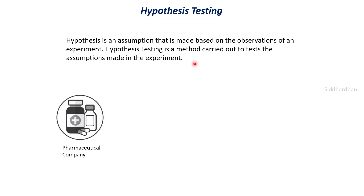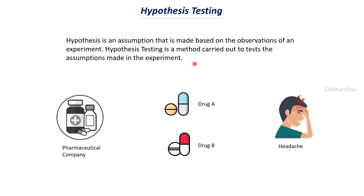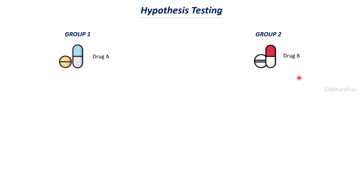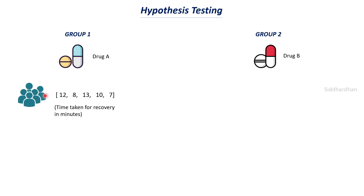Let's understand this with a more suitable example. A pharmaceutical company makes two drugs for a headache: drug A and drug B. They are carrying out a statistical study to find which drug is better — whether drug A cures a headache more quickly or drug B takes less time. They have two groups of people: group 1 has been administered drug A, and group 2 has been administered drug B. There are about five people in each group — this is just a small sample size for explanation purposes; generally the sample size will be much larger.